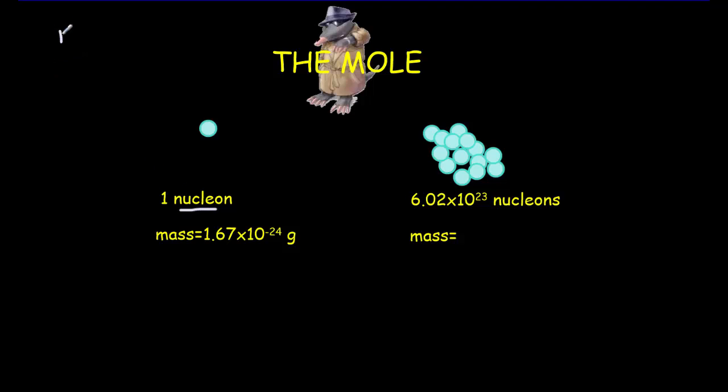A nucleon is either a neutron or a proton. To about three significant digits, the mass of a neutron and a proton is the same, and they're both found within the nucleus.